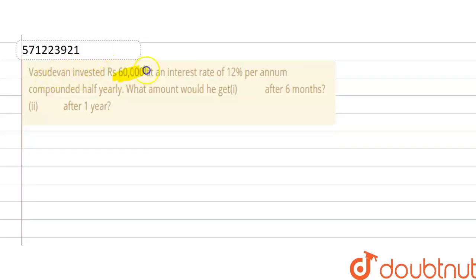invested rupees 60,000 at an interest rate of 12% per annum, compounded half-yearly. What amount would he get after six months and after six years? So let's start. The principle given is 60,000, and rate